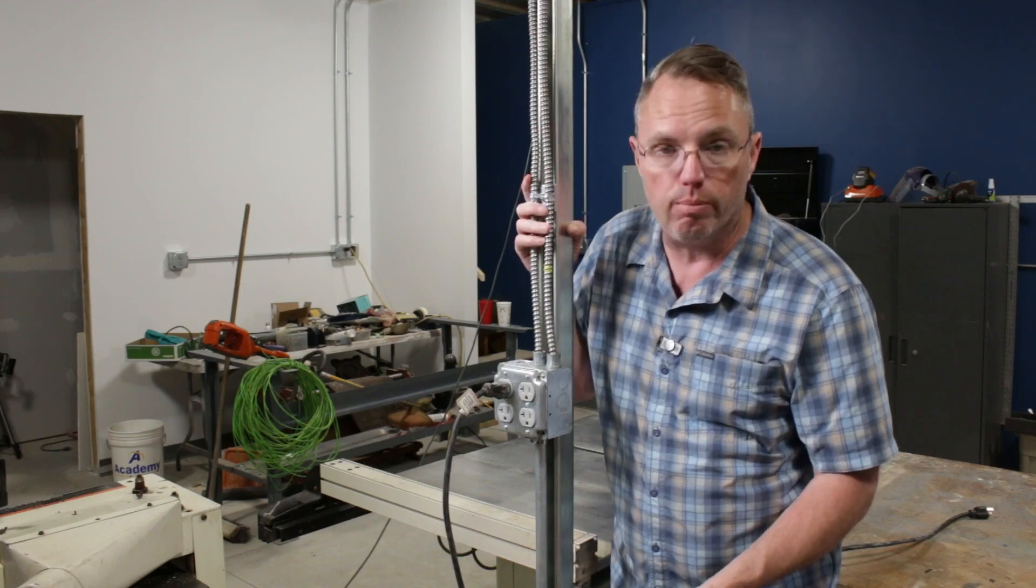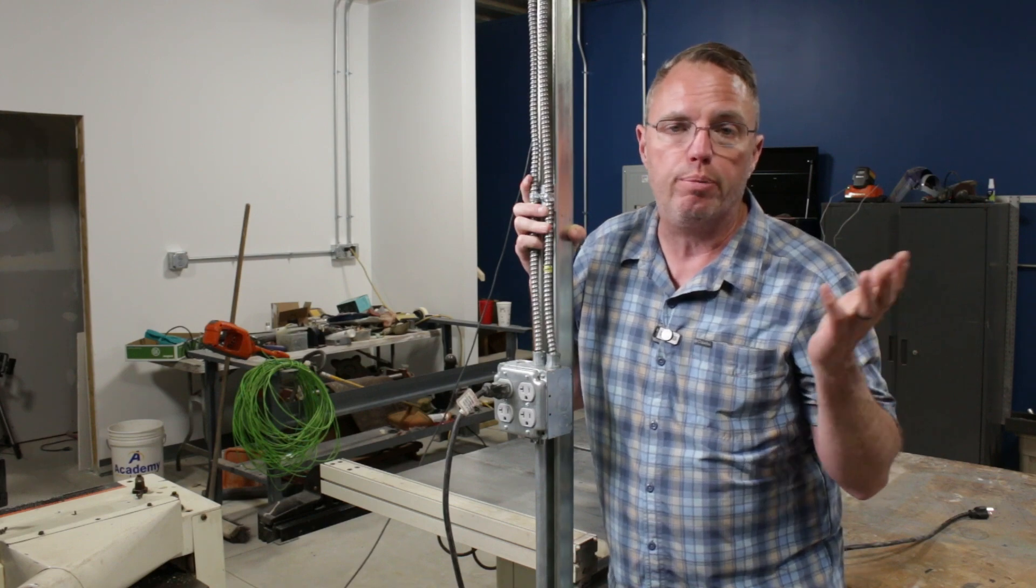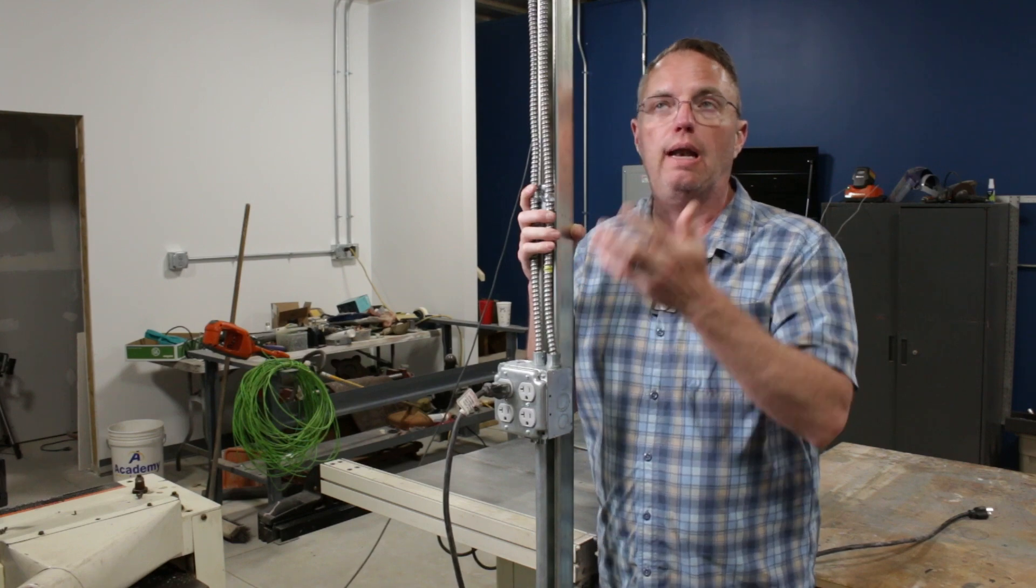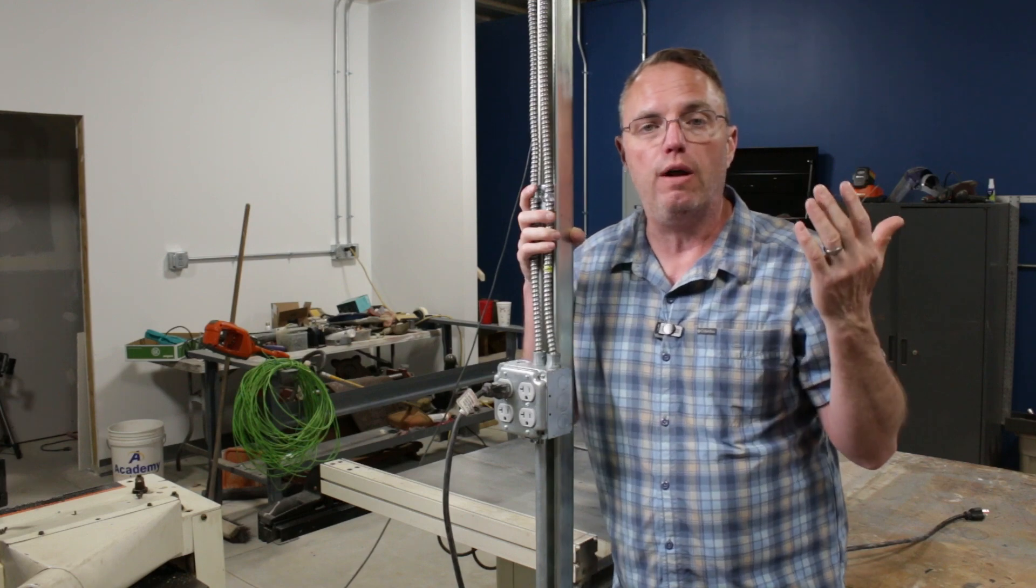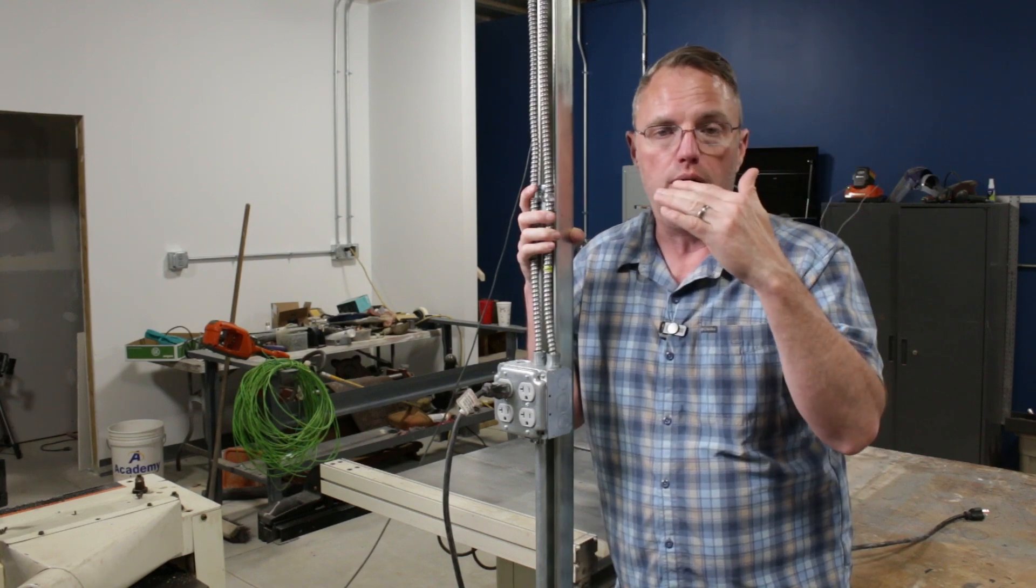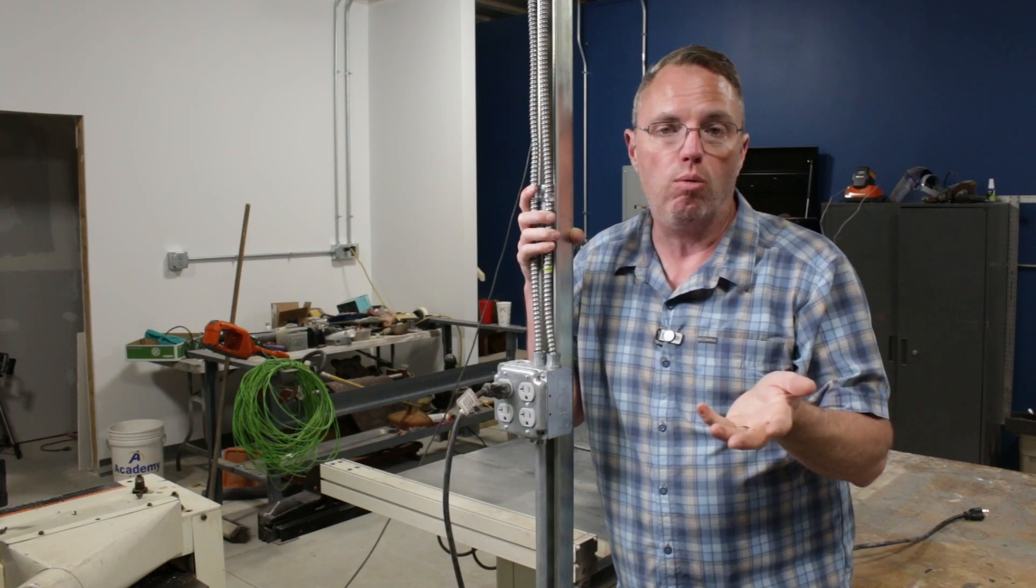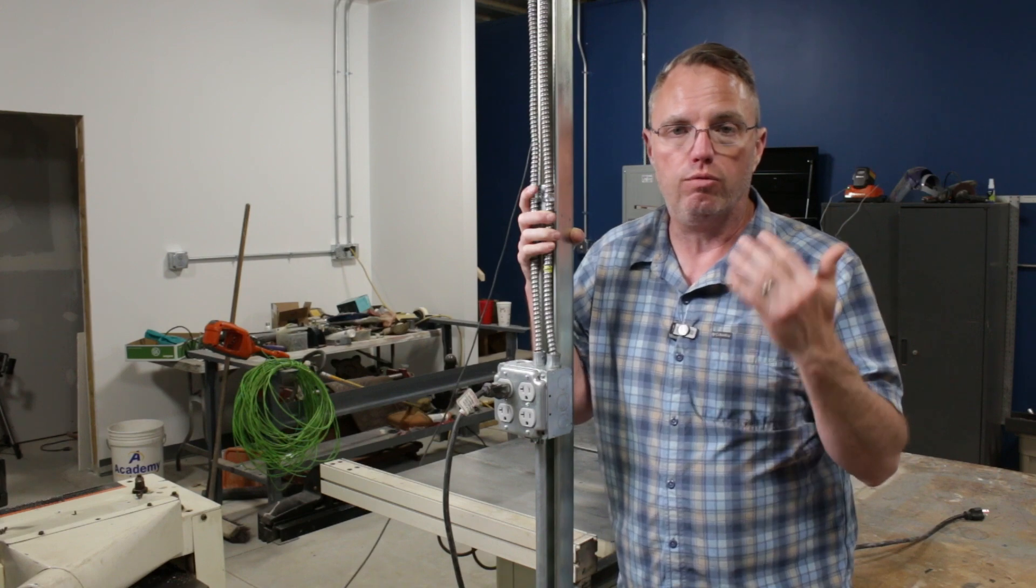I like this because it's really sturdy. I already had the top and bottom brackets that I bought for another project, so all I had to do is buy one stick of the Unistrut and it fit perfectly. They're 10 feet long, so it fit perfectly between my ceiling joists and the floor. My walls are 10 feet tall.